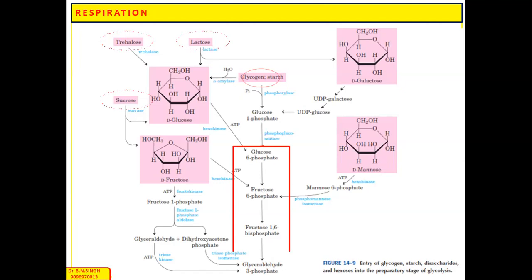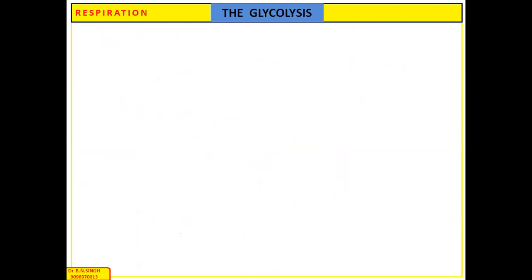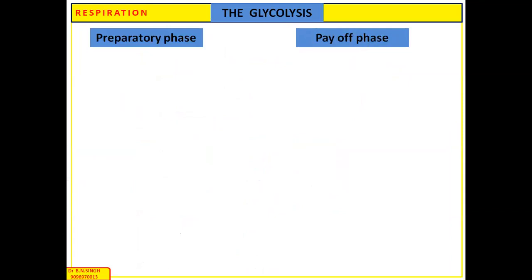These are the ways in which glycogen, starch, different disaccharides, and monosaccharides enter glycolysis. The glycolysis process completes in ten enzymatic reactions, starting from glucose and ending at two molecules of pyruvic acid containing three carbons. The glycolysis process completes in two different phases: the preparatory phase and the payoff phase.